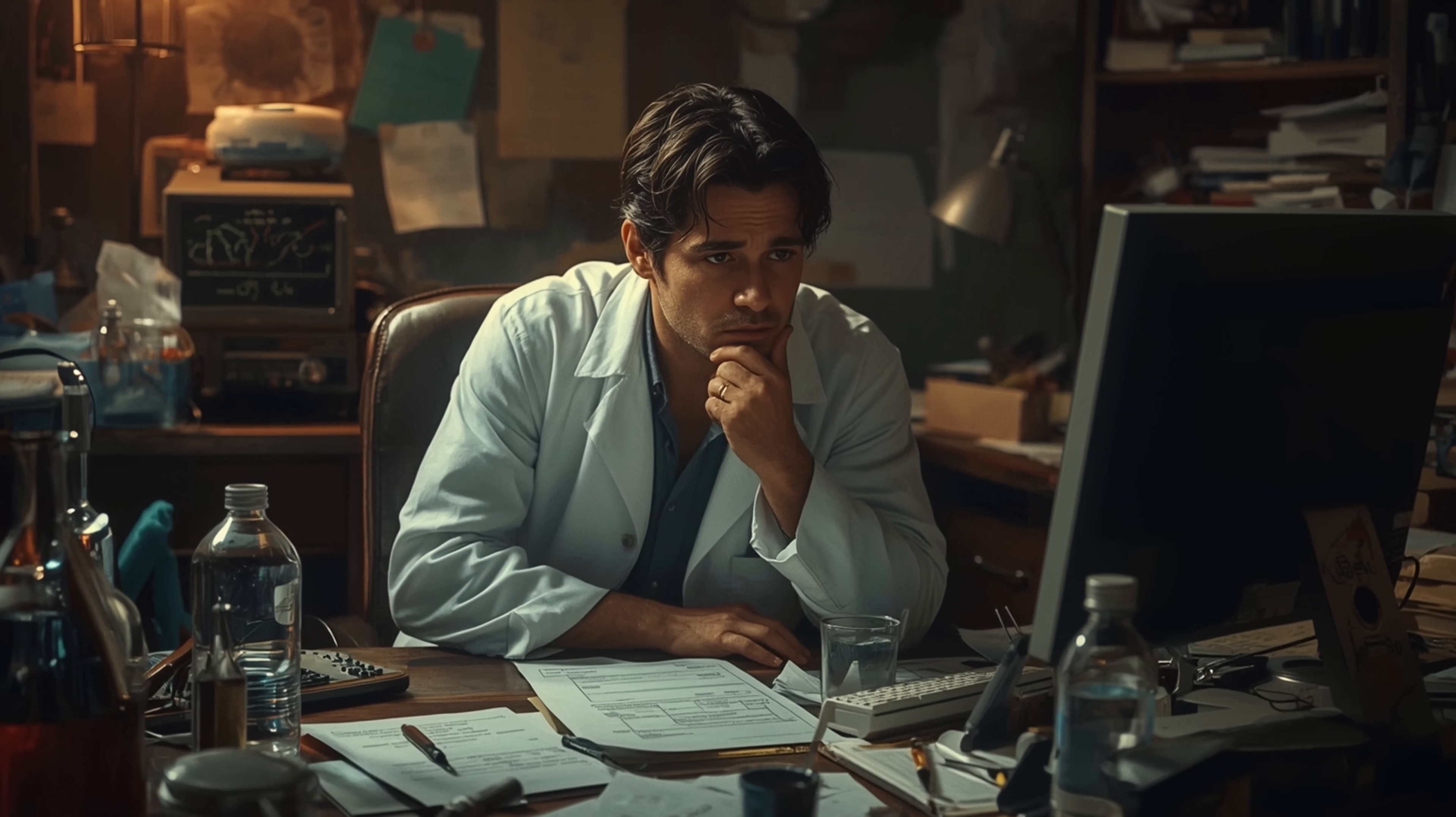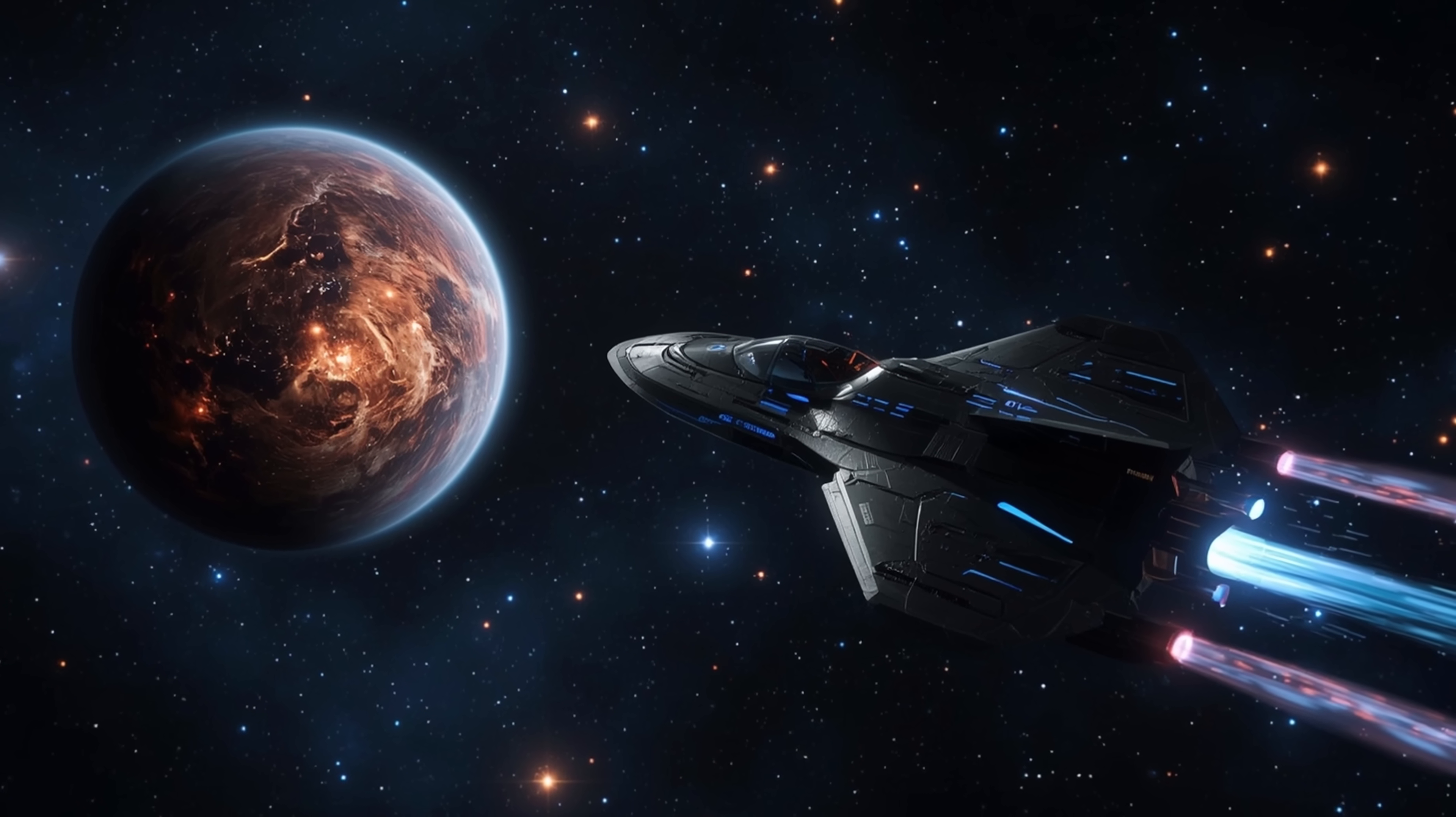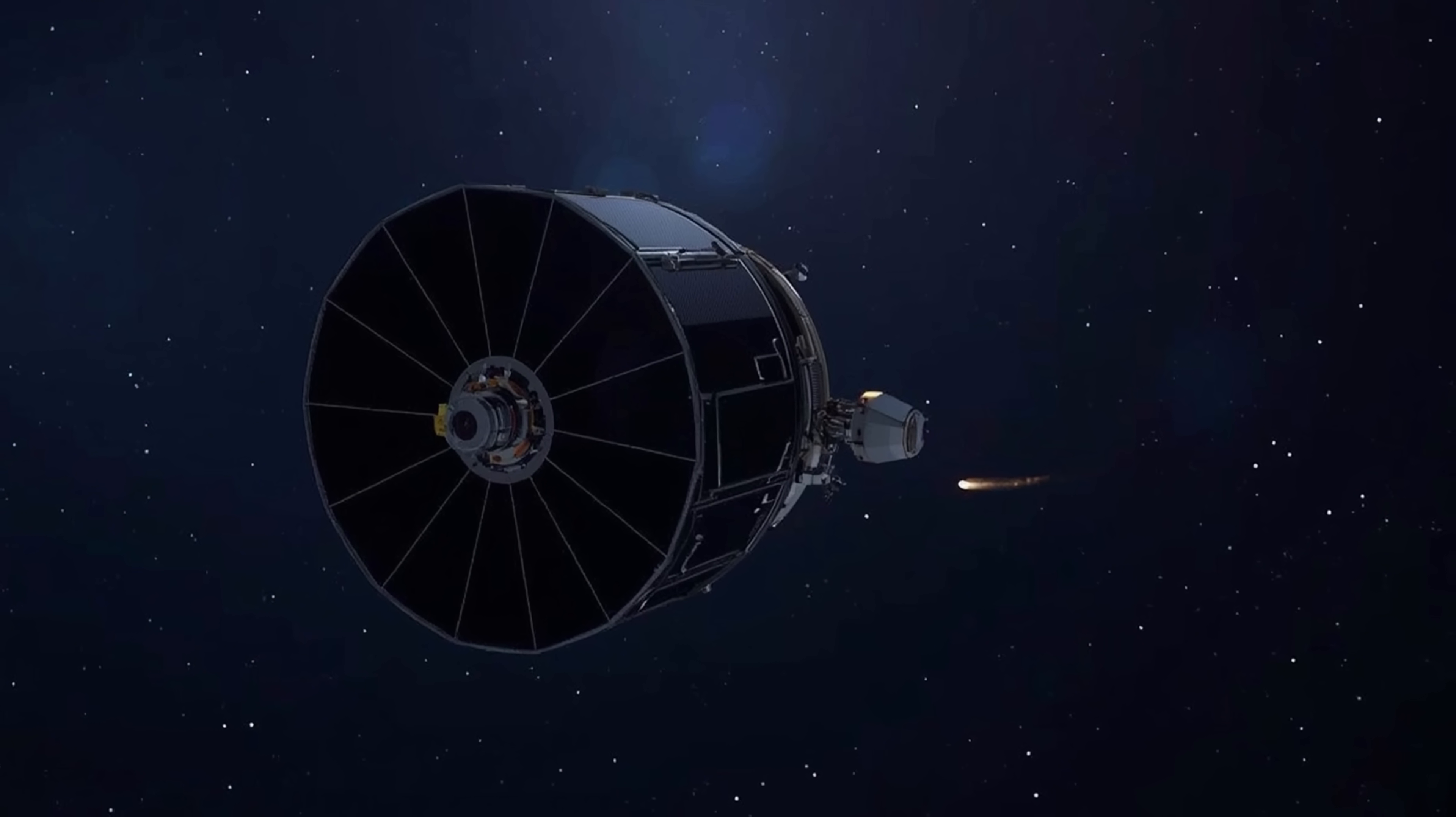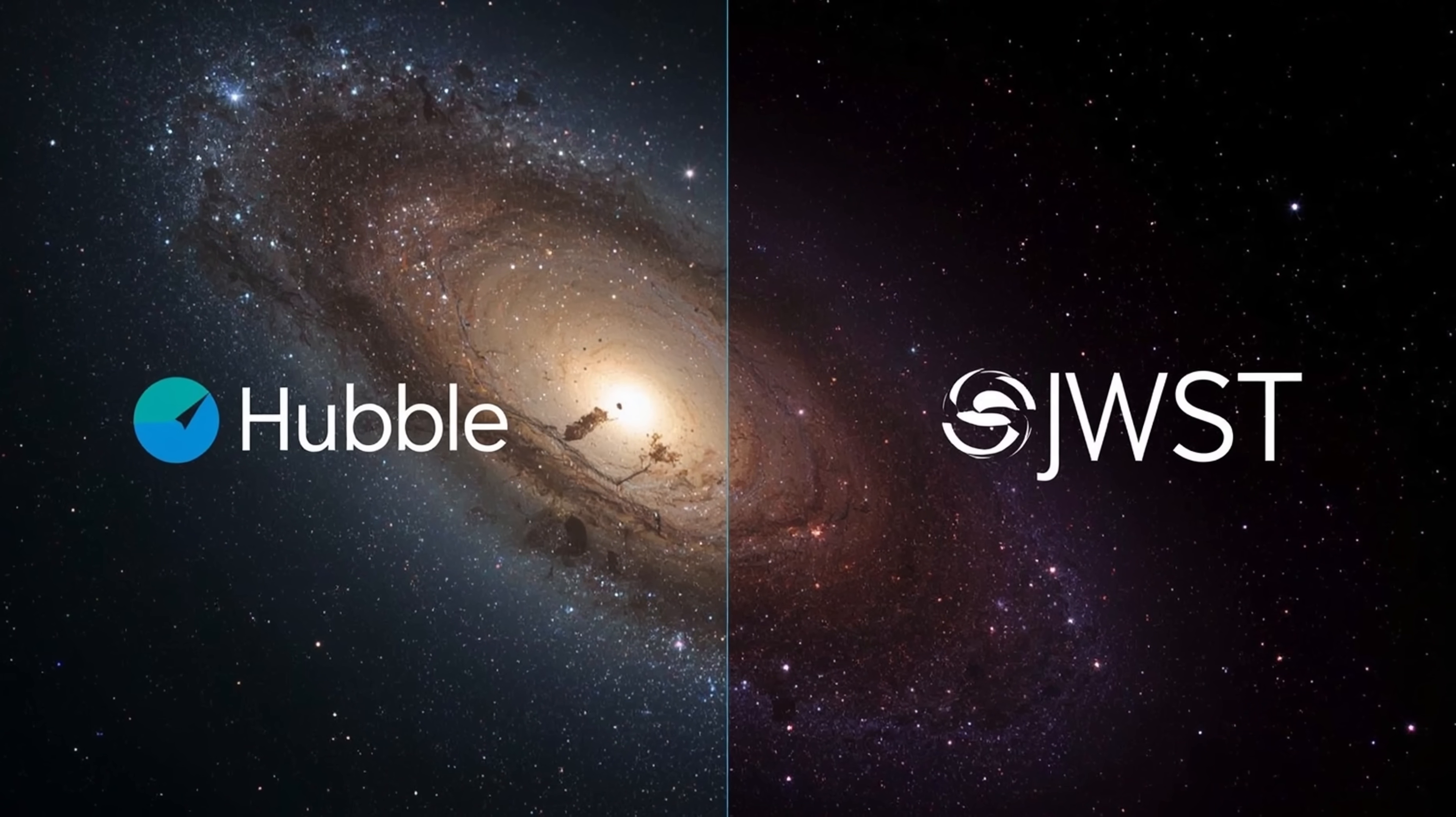The big uncertainty was whether it could even detect 3i Atlas in the first place. This visitor was both faint and fast. Unlike stars or galaxies which barely shift from night to night, Atlas raced across the sky. JWST, which normally studies very distant but relatively still objects, had to adjust its tracking rapidly to follow this small body. And because infrared light is sensitive to both heat and brightness, keeping the object centered long enough to record useful data was a serious test.